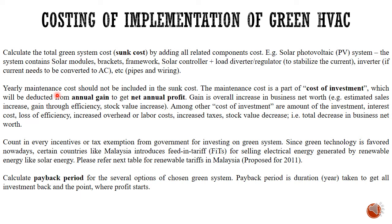The maintenance cost should not be included in your sunk cost, because the maintenance cost is actually part of cost of investment — your money out. The annual gain means your money in, or gain is the overall increase in business net worth. For example, estimated sales increase, gain through efficiency. If your new system is highly efficient compared to the existing system, the gain through efficiency directly converts to monetary gain.